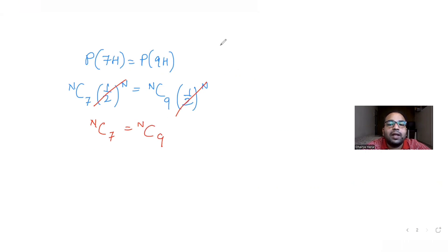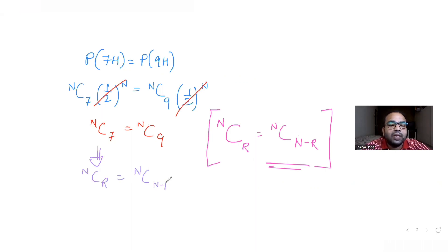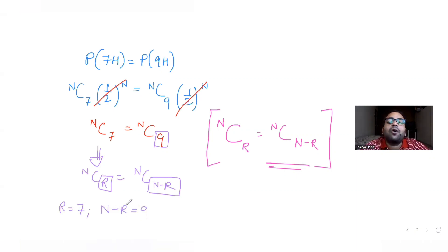To solve nC7 = nC9, we use the combination identity nCr = nC(n−r). Comparing, r = 7 and n−r = 9. So n − 7 = 9, which gives n = 16. The total number of tosses is 16.